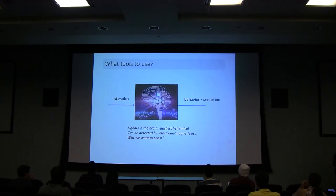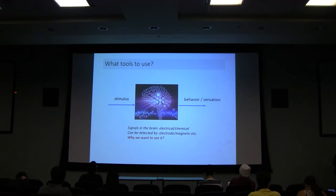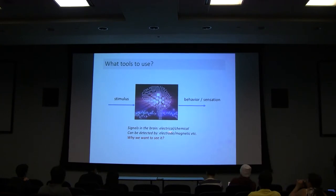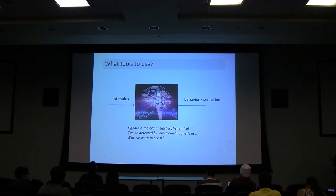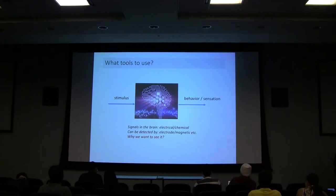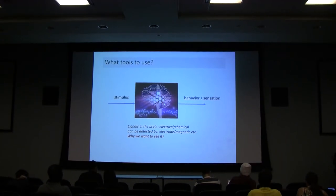Now I want to focus on how you probe the system — how do you get information from it. The traditional way is to use electrodes or magnetic methods like fMRI, since the brain produces electrical signals. But with electrode recording you can record the response from a neuron without actually seeing the neuron itself. So the question is: why do we want to see it? Why do we want to do imaging?